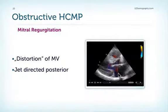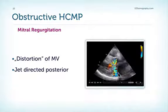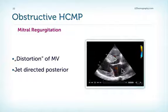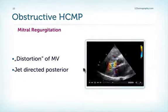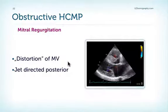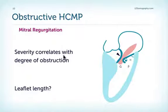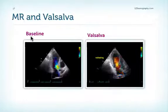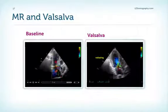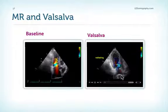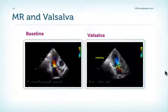Returning to mitral regurgitation in patients with obstruction: we have a jet directed posteriorly into the left atrium, caused by the systolic anterior motion and distortion of the mitral valve. The reason for regurgitation is the motion of the anterior leaflet but also the posterior leaflet — if the posterior leaflet is short it cannot follow the anterior leaflet, producing a coaptation defect. The severity of regurgitation correlates with the degree of obstruction: during baseline there is only mild mitral regurgitation, but after Valsalva maneuver with increased gradient, mitral regurgitation increases to at least moderate or moderate-severe.